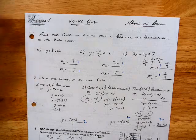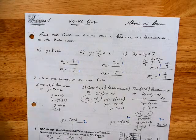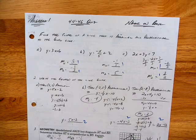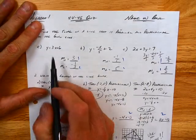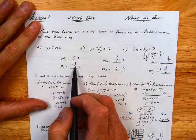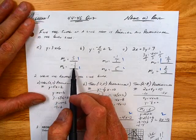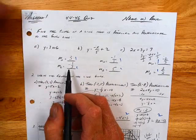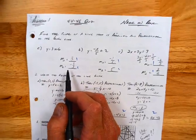So the first ones — you guys did well with this. These should be automatic. Slope is 3, parallel is 3, perpendicular is negative 1 third.